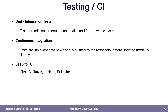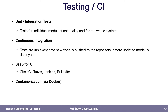SaaS for continuous integration is kind of the way people do it unless you're at a big company. You have CircleCI, Travis, Jenkins which can be hosted on-prem, and Buildkite which can also be hosted on-prem. The other interesting and important thing to know here is containerization, and that's what Docker is for. That means it's a self-enclosed environment with exactly pinned dependencies including the operating system, the libraries, any binaries you might be using, and your Python environment for running the tests.